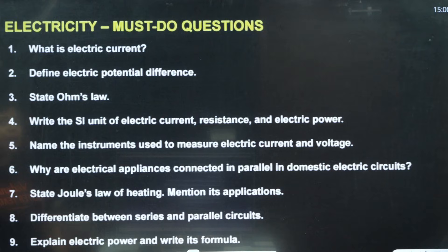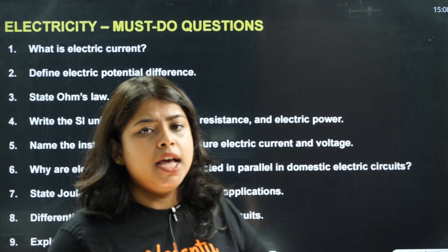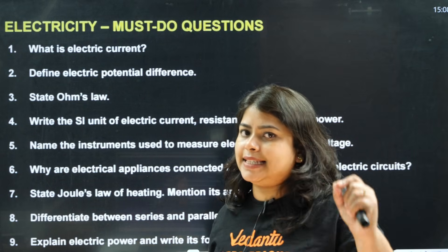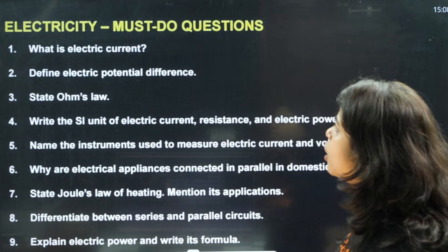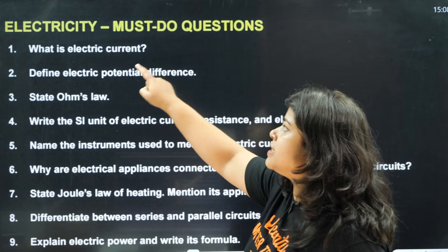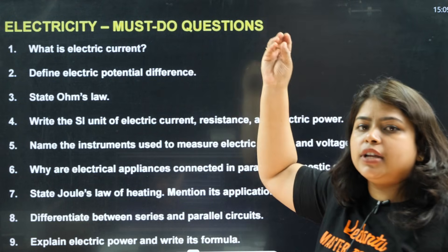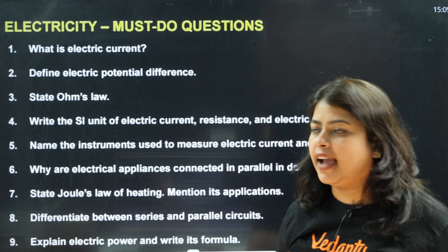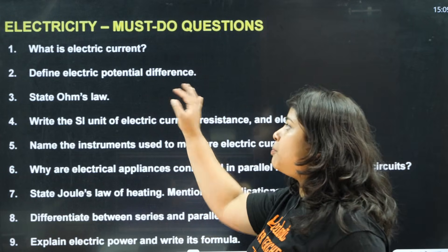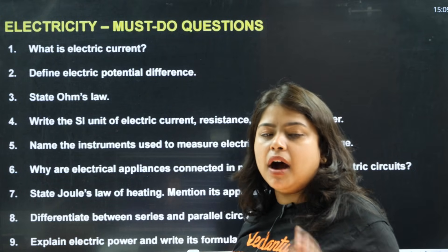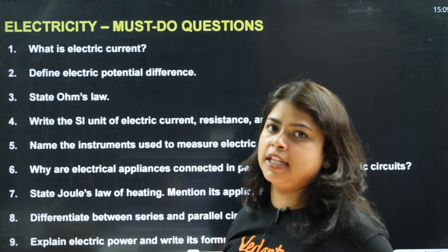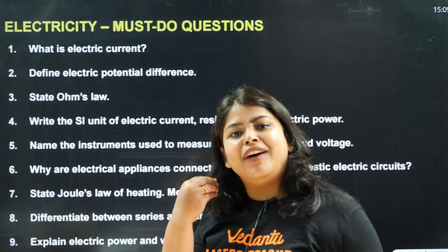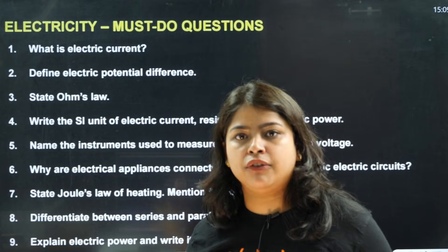From the Electricity chapter, these are the must-do questions. If you do these questions, you can score easily. First: What is electrical current? This question is asked 100% every year. Next: Define electrical potential difference — this has appeared in model question papers too. Next: State Ohm's law — this is a favorite question; it appears in every question paper.